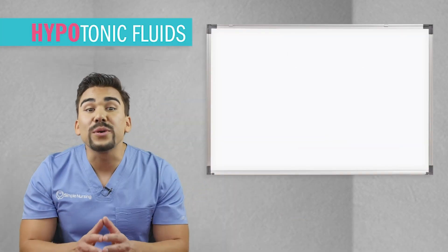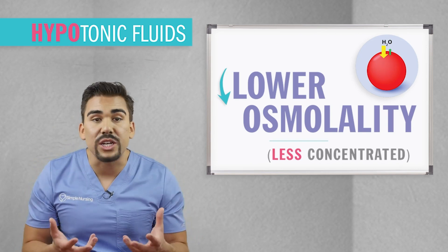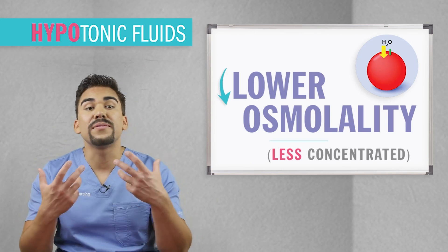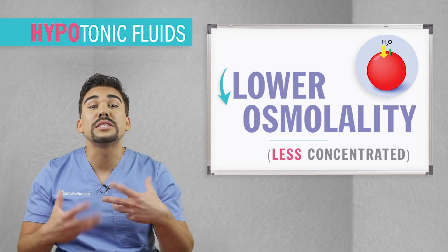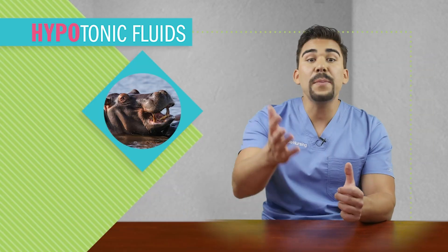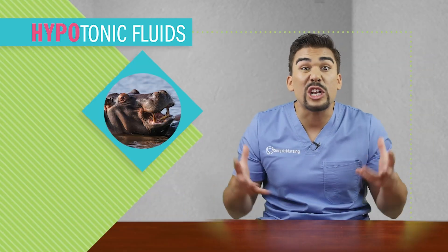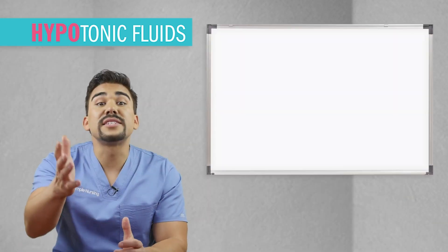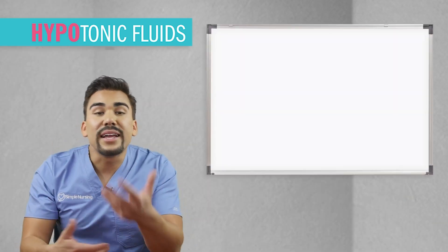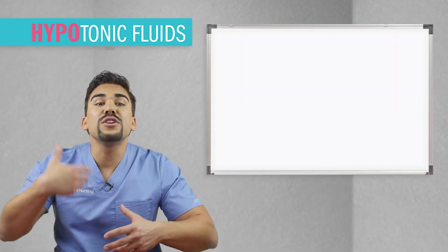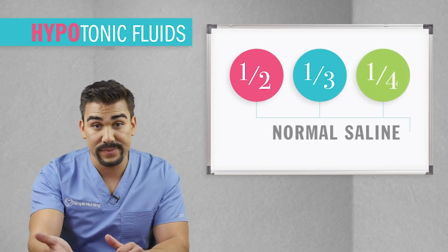Hypotonic fluids have a lower osmolality — basically a less concentration than body fluids — because all that water dilutes their concentration. Hypotonic solutions are usually half, one-third, or even one-fourth of normal saline.